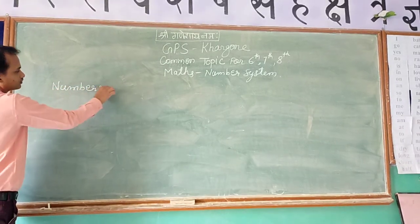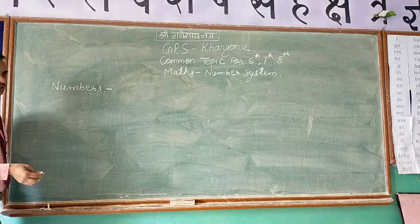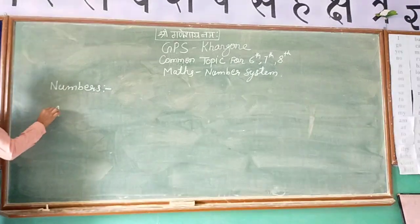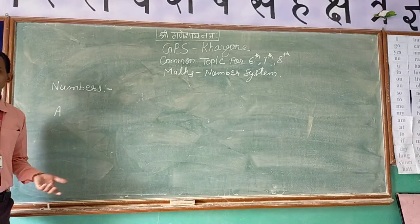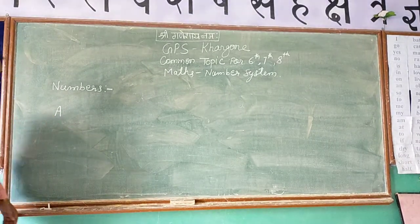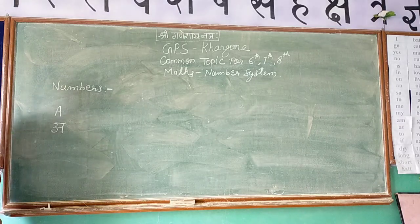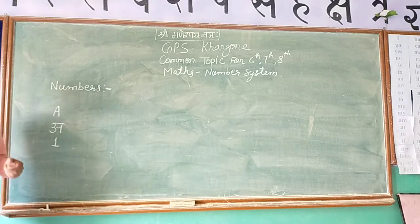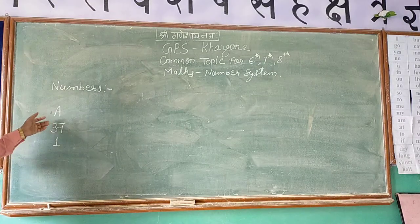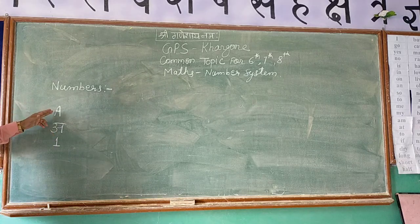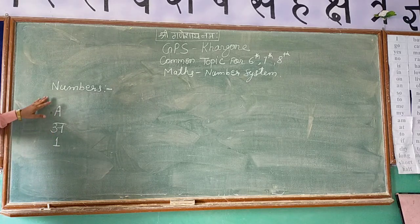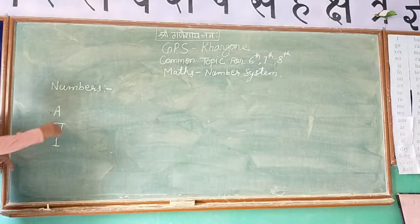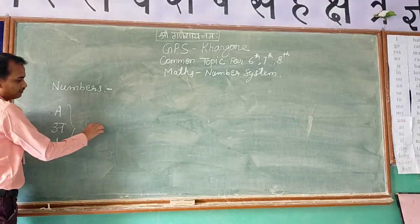In nursery and LKG classes, when your study begins, your teachers and parents point to something and you reply. For example, this is A for apple. Then, what is this? This is one. Why is it A for apple and not something else? Why can't we call it B? Because these are commonly accepted things.